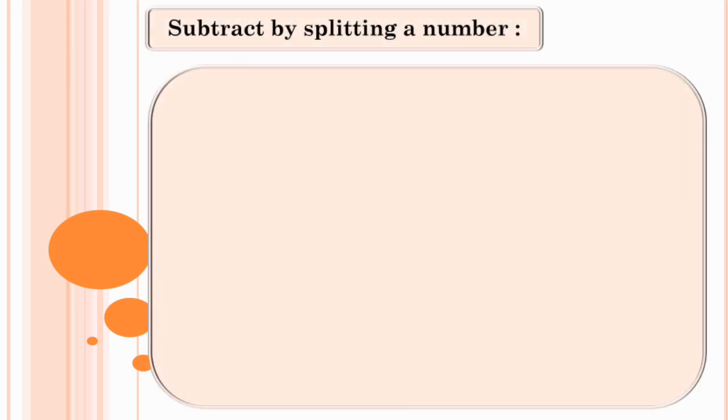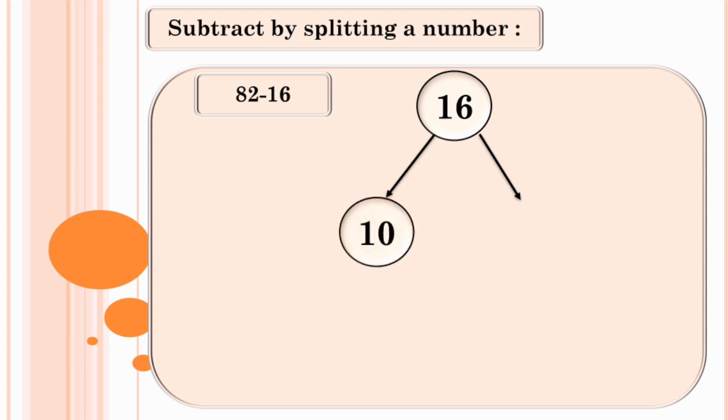Subtract by splitting a number. Part A: 82 minus 16. In this first question, we will learn to subtract by splitting a number. Look at this sum. We have to subtract 16 from 82. We will split 16 as 10 and 6.